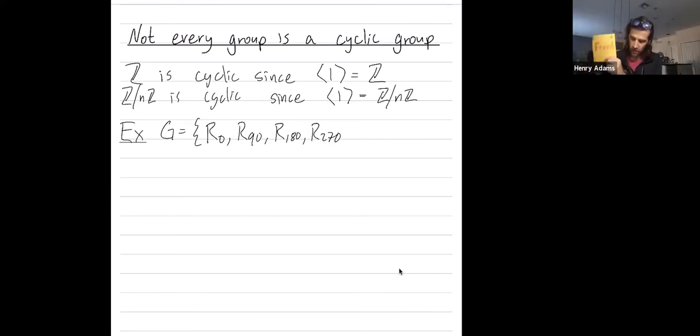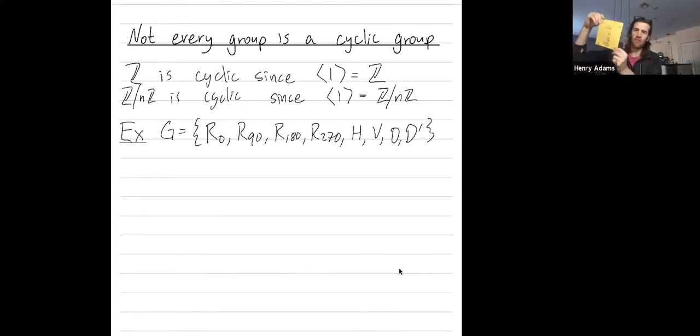And then you can flip across this horizontal line. You can flip across this vertical line. And then there are two different diagonal flips, which I'll call d and d prime. So you could flip d or this flip d prime. And all these symmetries map the square on top back onto itself.